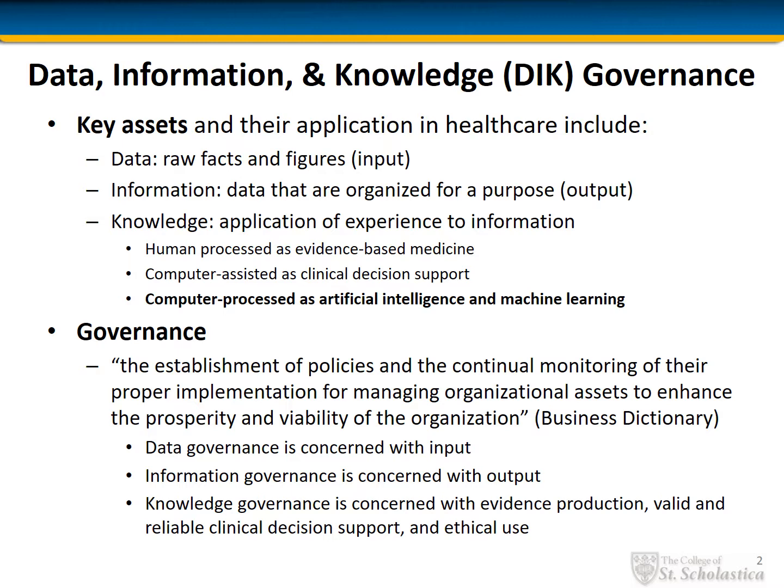So what do we mean by data and information and knowledge governance? Perhaps first we need to consider the key assets to be governed: data, information, and knowledge. Data are often described as raw facts and figures or input. Information is data that are organized for a particular purpose. Knowledge is the application of experience to information.